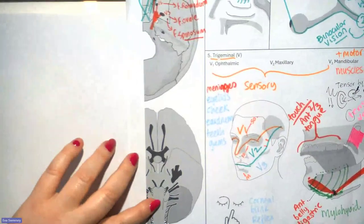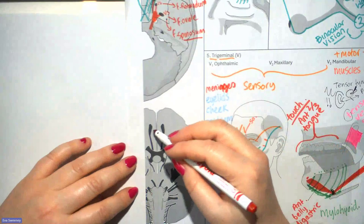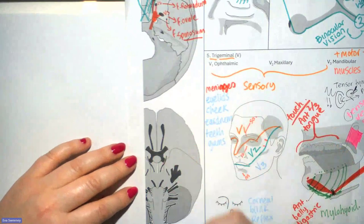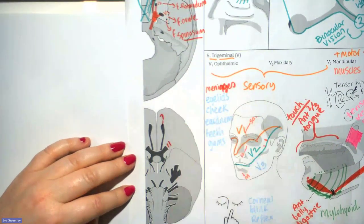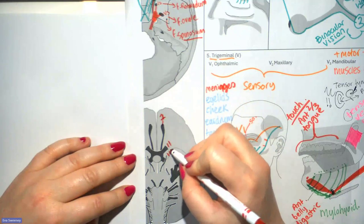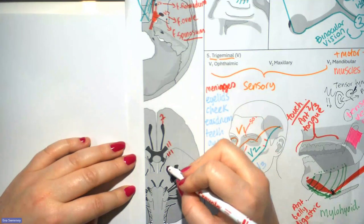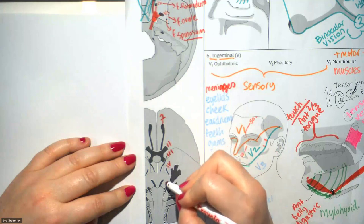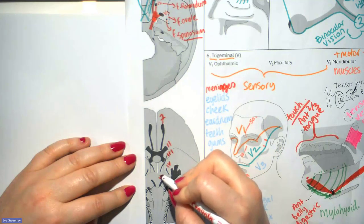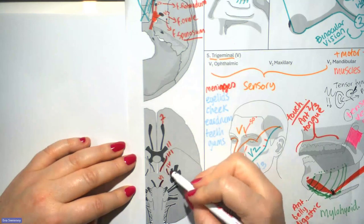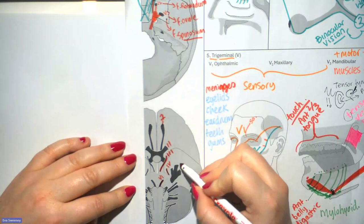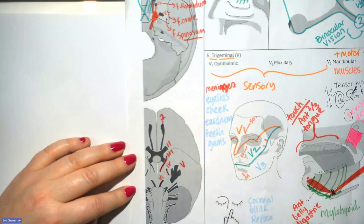Looking at the cranial nerves as they emerge: the olfactory, the optic, the oculomotor, the trochlear, and the abducens — three, four, six make my eye do tricks. And then this large one with three branches coming off it is the trigeminal.